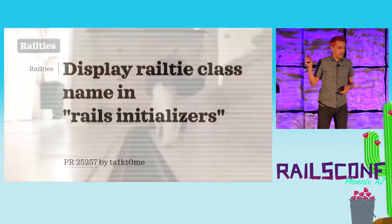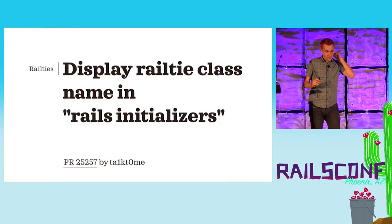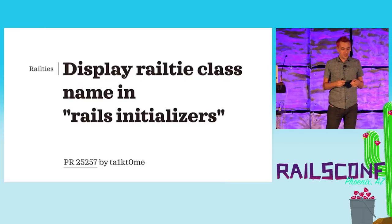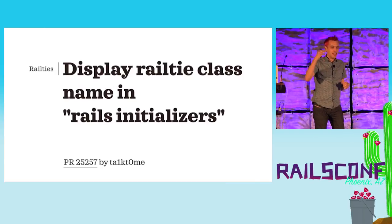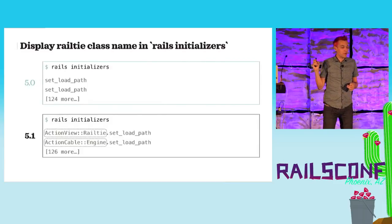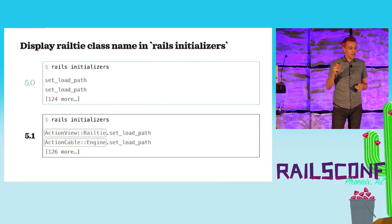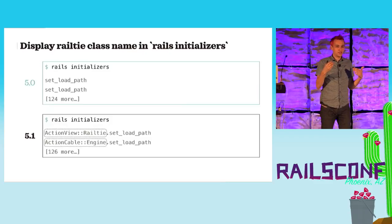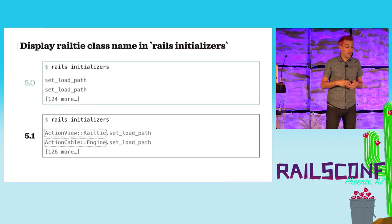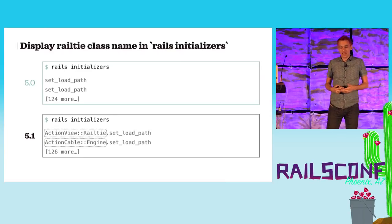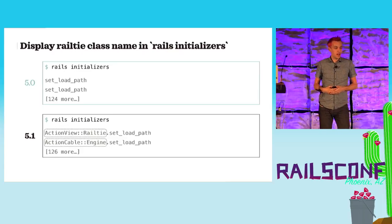Now let's continue with Railties. If you're in your terminal you can type rails initializers and that will print out all the initializers of your app. The problem in 5.0 is it only prints out the method name, and different classes can use the same method name so you can't really tell them apart. In Rails 5.1 it's going to output the name of the class and the name of the method — less confusing and more useful, especially if you use Rails engines.